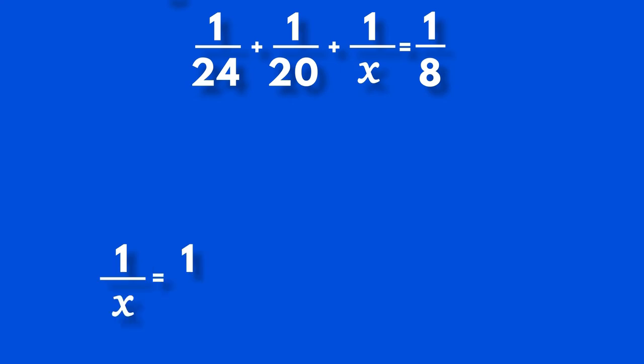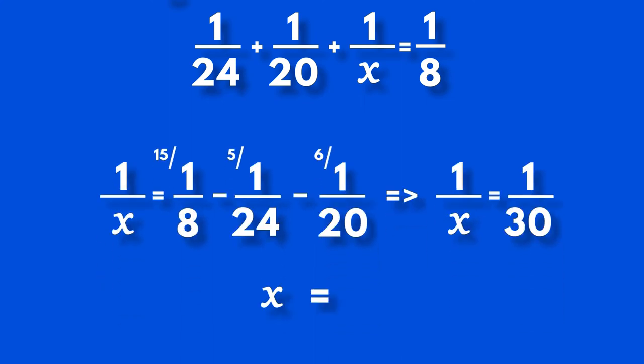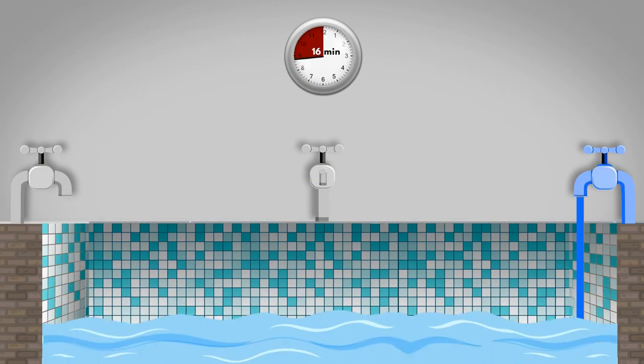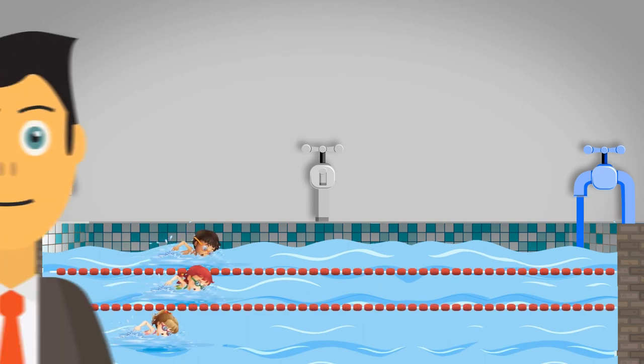1 over x equals 1 over 8 minus 1 over 24 minus 1 over 20. 1 over x equals 1 over 30, which means x equals 30. 30 minutes. Our handy equation has given us the time in which the third tap alone can fill the pool. The contest can start on time.